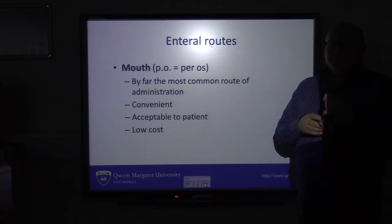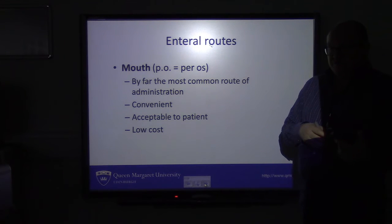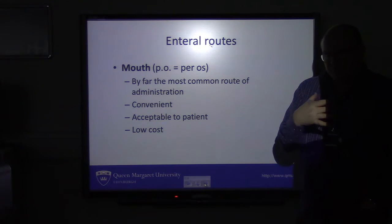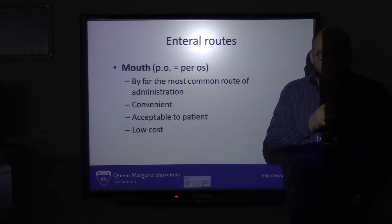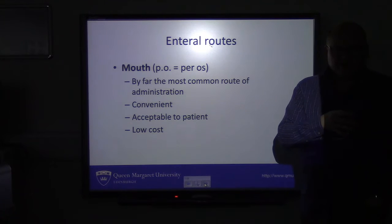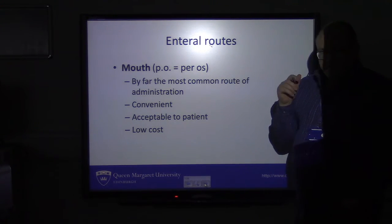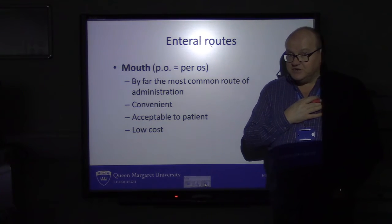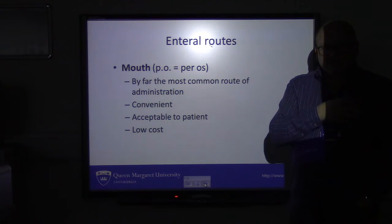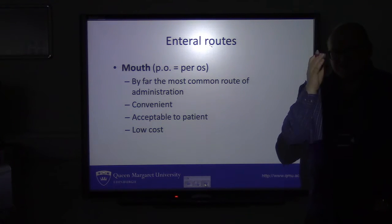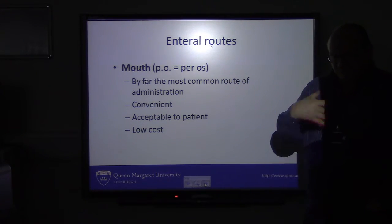Probably the easiest way to give a drug is per os — P-O — through the mouth. When drug companies are designing their drugs, more often than not they're looking to see if the drug can be given orally, either in tablet or liquid form. It's convenient, it's acceptable to the patient, and it's relatively low cost. But of course it then has to be absorbed from the gut, so it's got to have the right pharmacokinetics to have a good absorption rate from the GI tract.